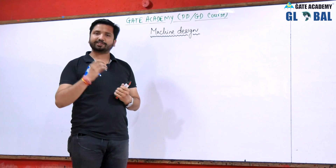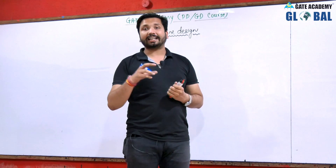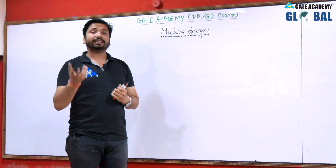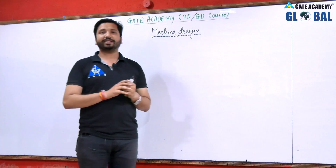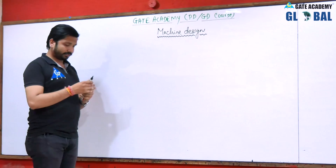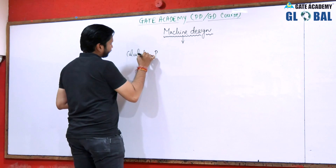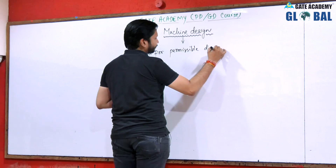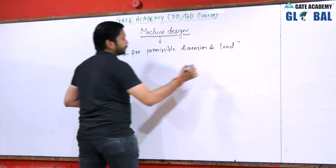Here we are using fundamental concepts of strength of materials. In strength of materials, we were not using fluctuating loads or dynamic loads — those were not there. But in machine design, mostly we will be dealing with fluctuating loads — that is, loads whose magnitude and direction may vary with respect to time. Whereas in the case of strength of materials, the load was static: its magnitude and direction were constant. So in machine design, what we will be doing is deciding the permissible dimension and load.